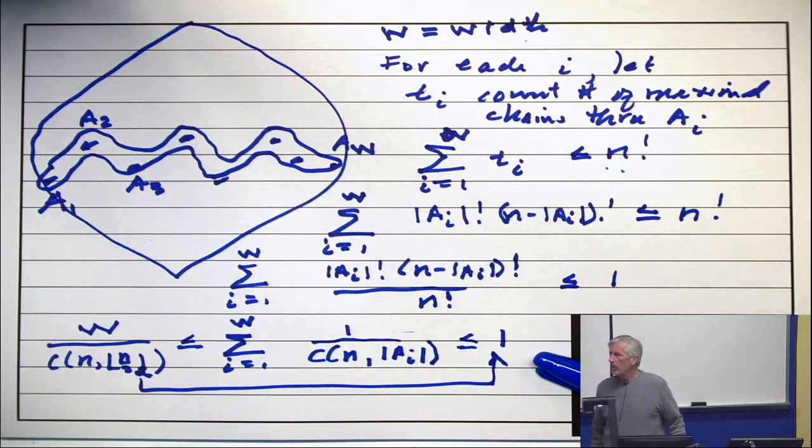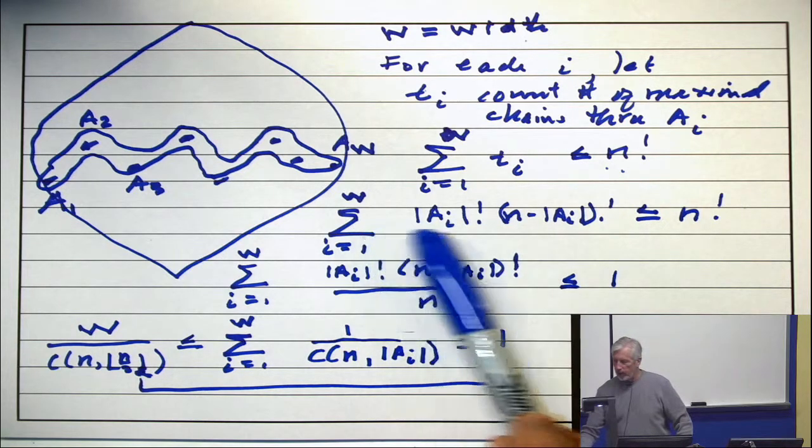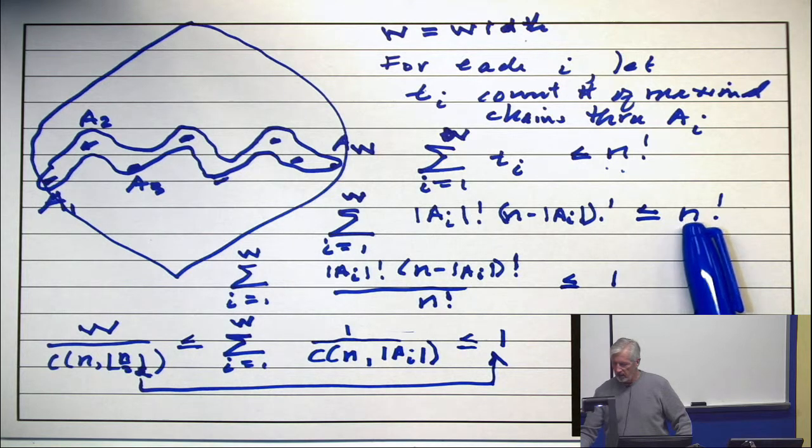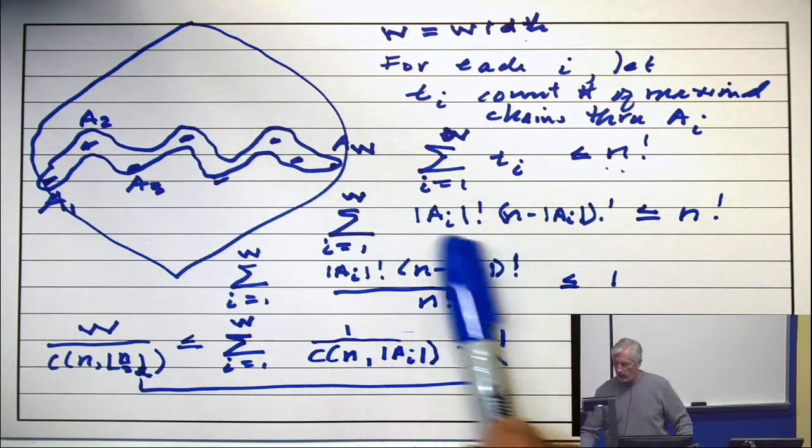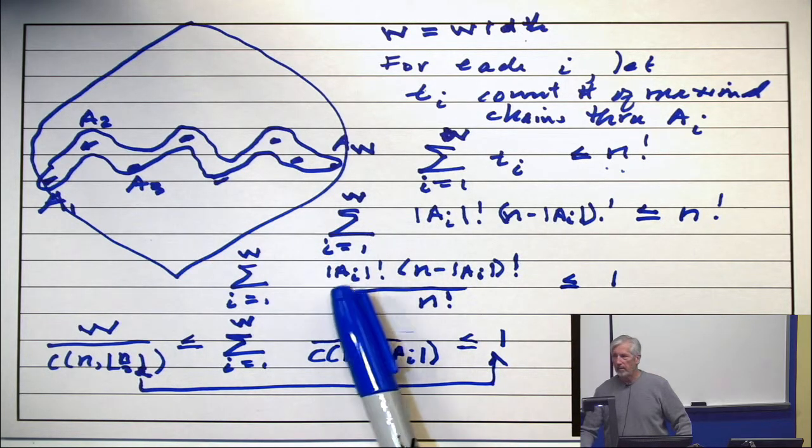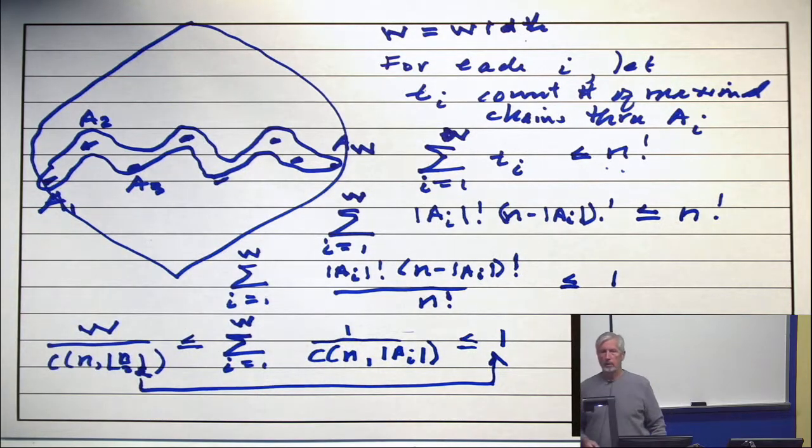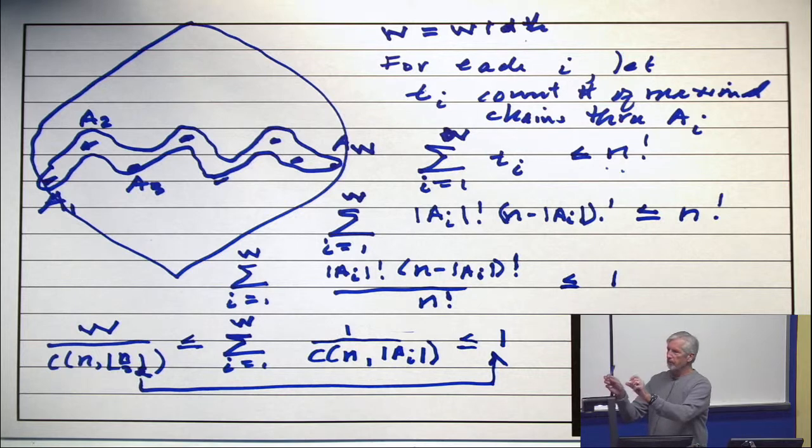Question. Why did we take the reciprocal? Why did we take the reciprocal? I didn't really take it. It jumped out of a cave and grabbed me. See, here was a count for maximal chains. And when I divided by n factorial, there is the animal. I didn't create it. It came to me quite naturally. So that's why I took a reciprocal. I didn't take it. That is a reciprocal. I'm not really being facetious here. I didn't consciously take a reciprocal. I did a calculation.